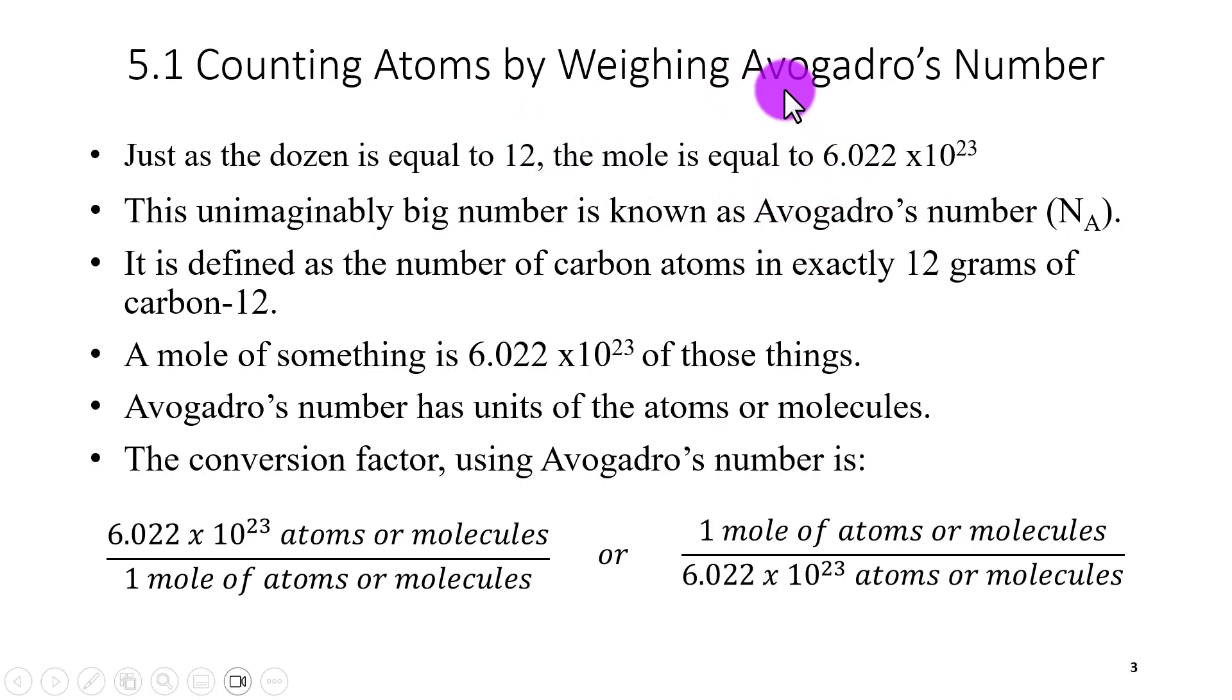The mole is equal to 6.022 times 10 to the 23rd after the guy who discovered it, and these could be atoms, they could be molecules, they could be donuts, they could be whatever. So it doesn't really matter what I am measuring, the mole is equal to this many individual pieces. Just like the dozen is equal to 12, the mole is equal to 6.022 times 10 to the 23rd.